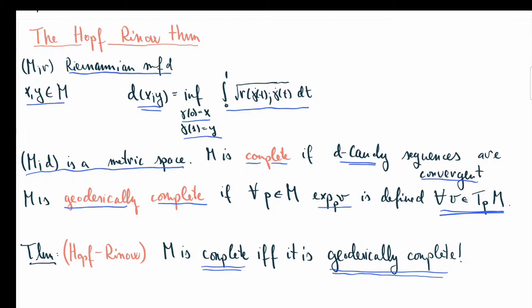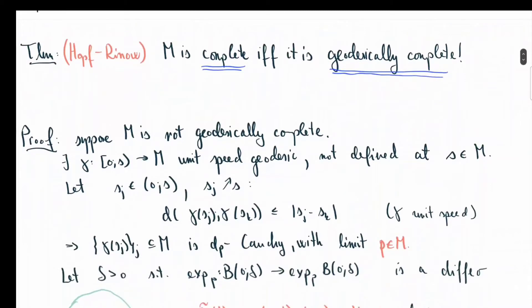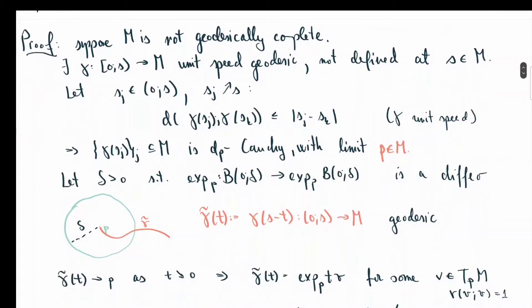Let me give you the proof of this result. Let's start with the relatively easy direction. We assume M is not geodesically complete, and assume that it is metrically complete. If it's not geodesically complete, then one can find a unit speed geodesic parameterized between 0 and s that cannot be extended at s.